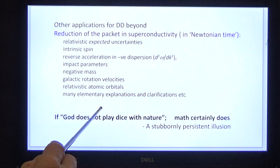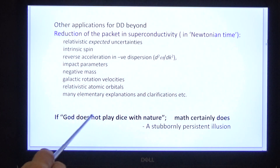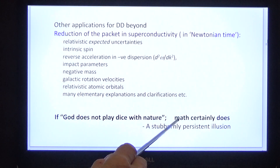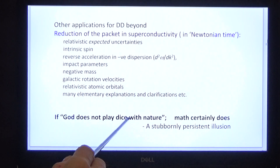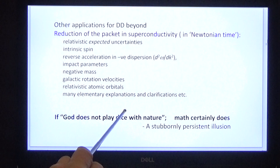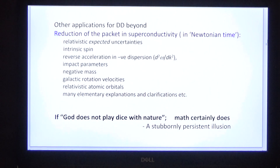Many other calculations have been made based on dispersion dynamics. But one final reflection: nature is much more consistent than mathematics. Einstein complained, 'God does not play dice with nature' — mathematics certainly does. Hawking considered this was a stubbornly persistent illusion, but then he propagated a theory of everything — the solution of nothing.